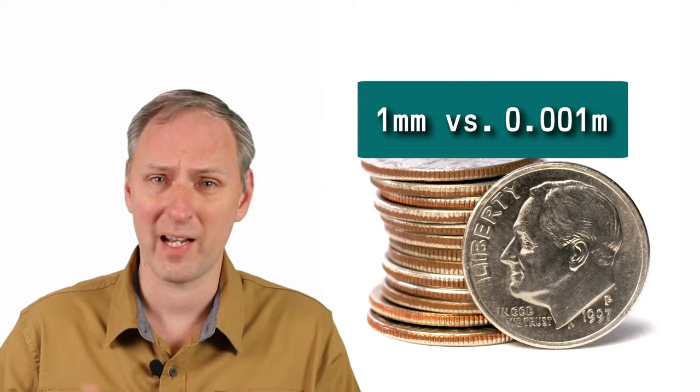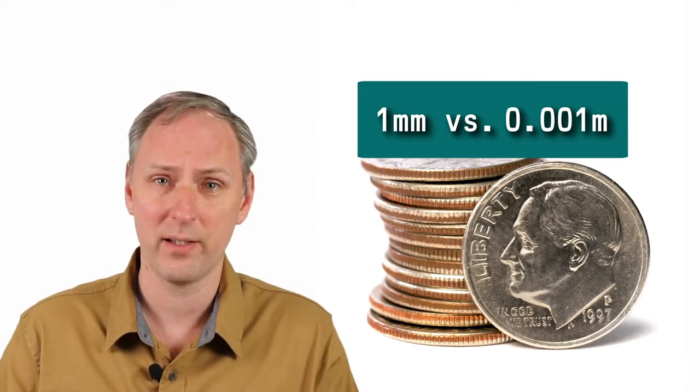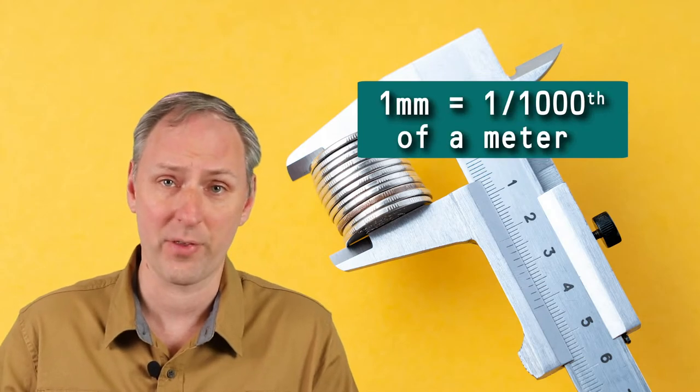Take, for example, measuring the thickness of a coin. I'm more likely to say it's one millimeter thick than I am to say it is 0.001 meters thick. A millimeter is a one-thousandth of a meter.